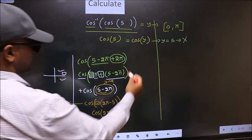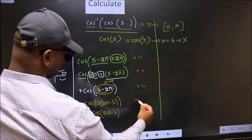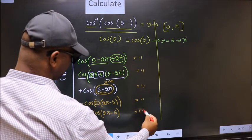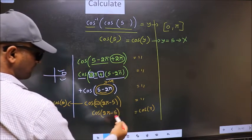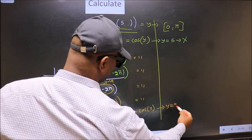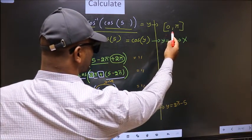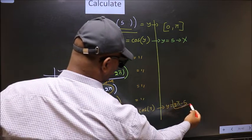Now on the other side no change equal to cos y. Now comparing both sides we get y to be 2 pi minus 5. Does this lie in this interval? Yes. So this is our answer.